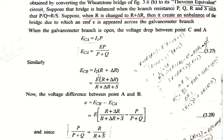Similarly, the voltage drop across CB — the potential drop across the unknown resistance R — equals I₂(R + δr). Substituting the value of I₂, E_CB = E × (R + δr) / (R + δr + S), where the denominator includes the total resistance of that branch and E is the total voltage drop across arm CD.